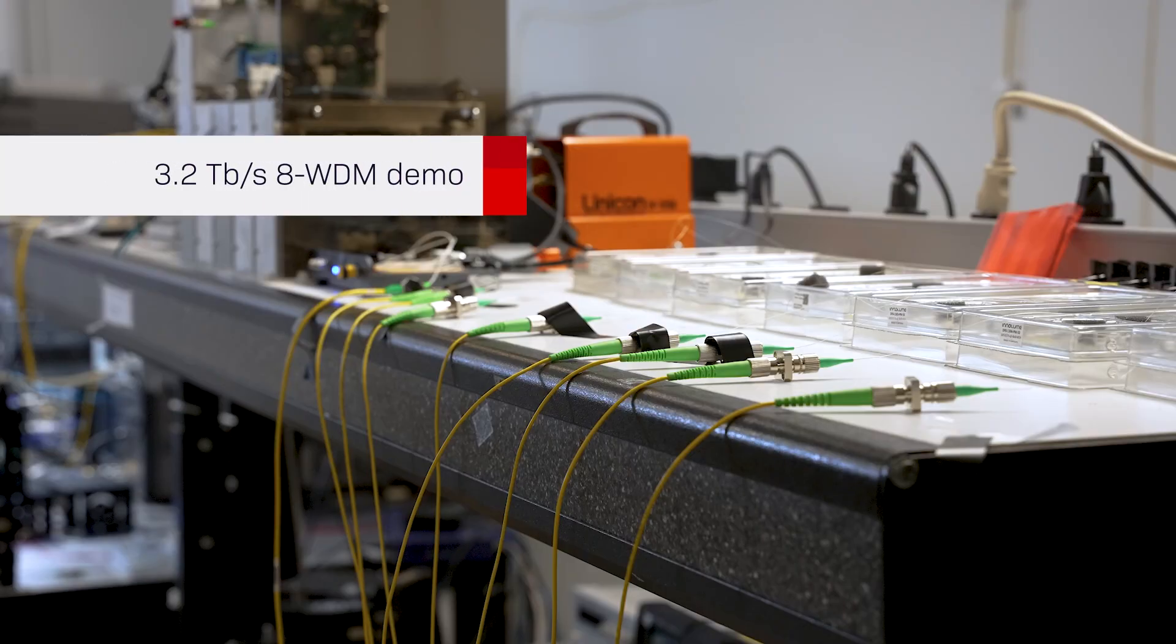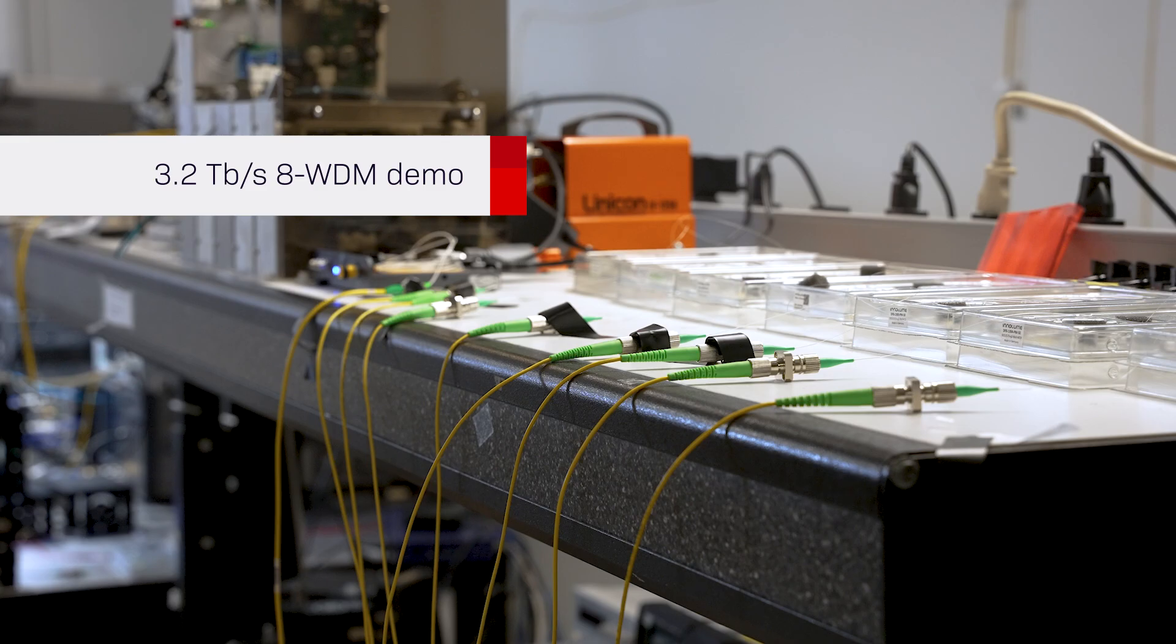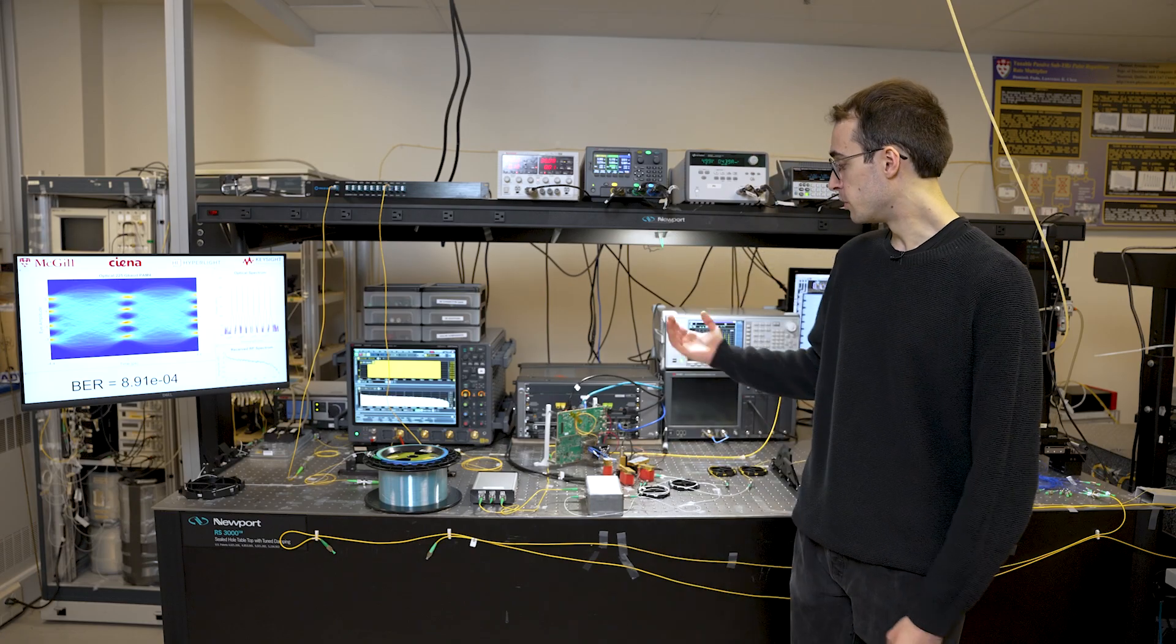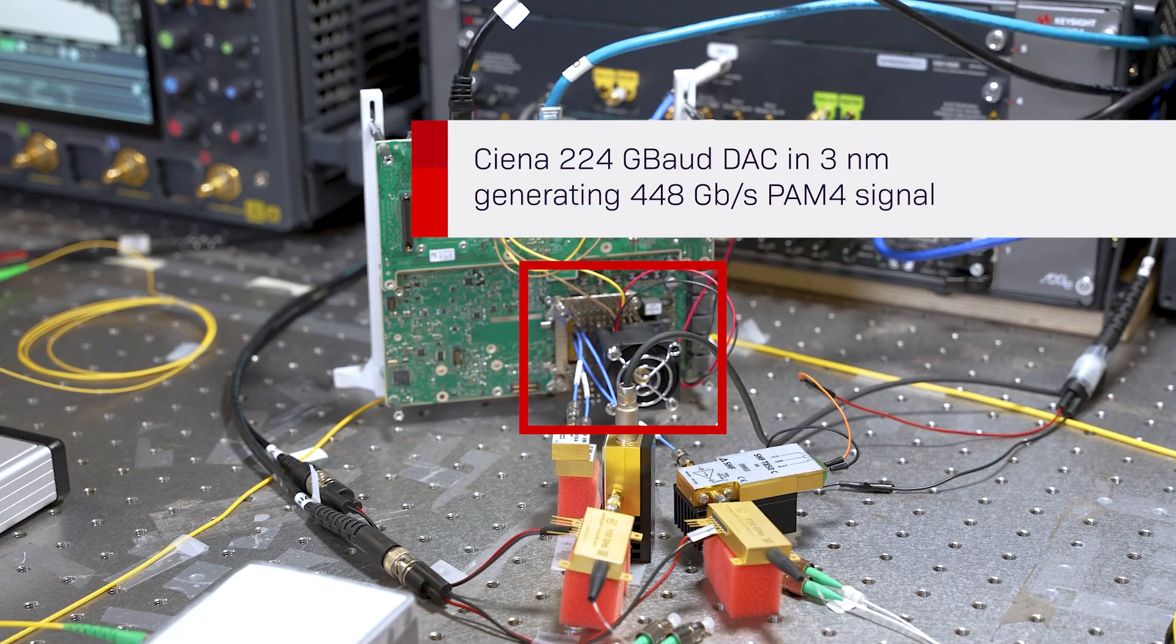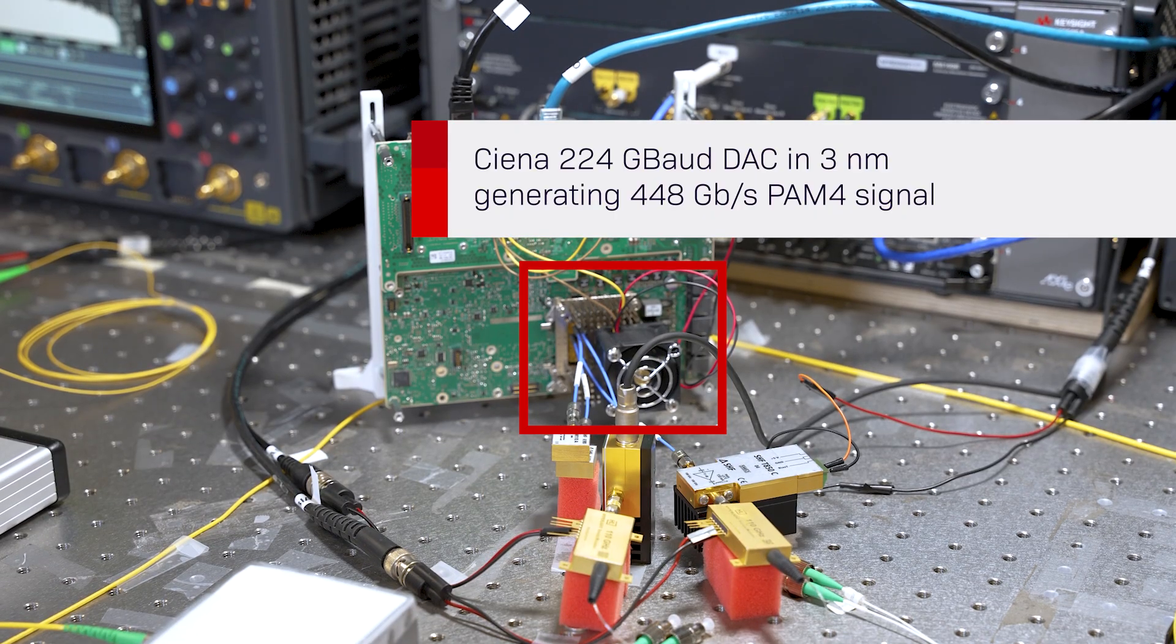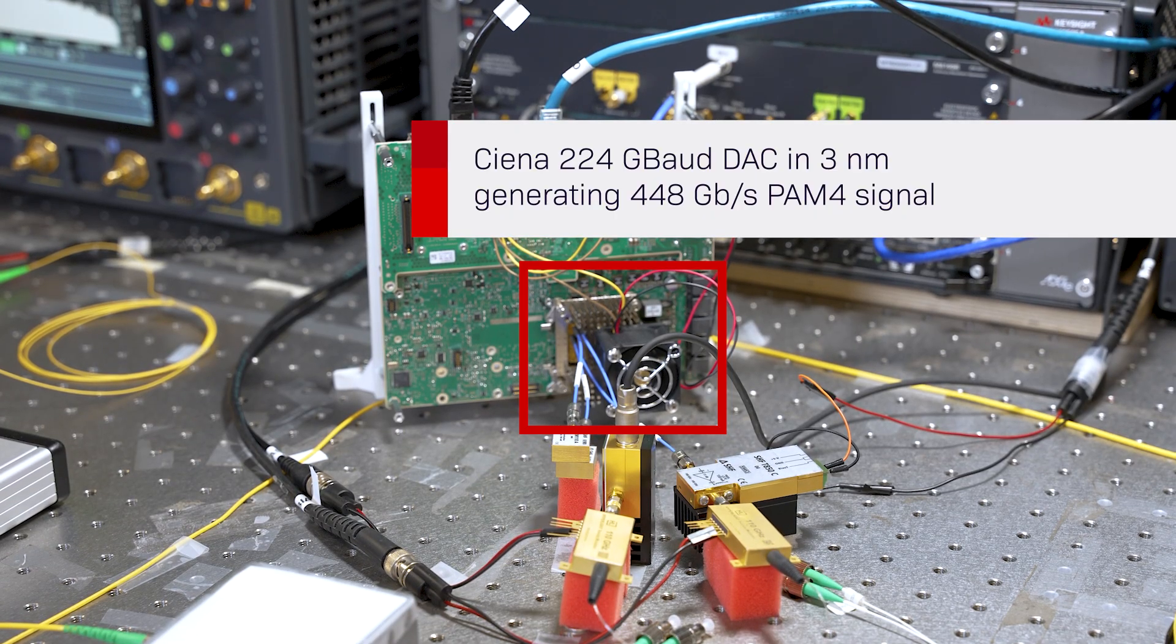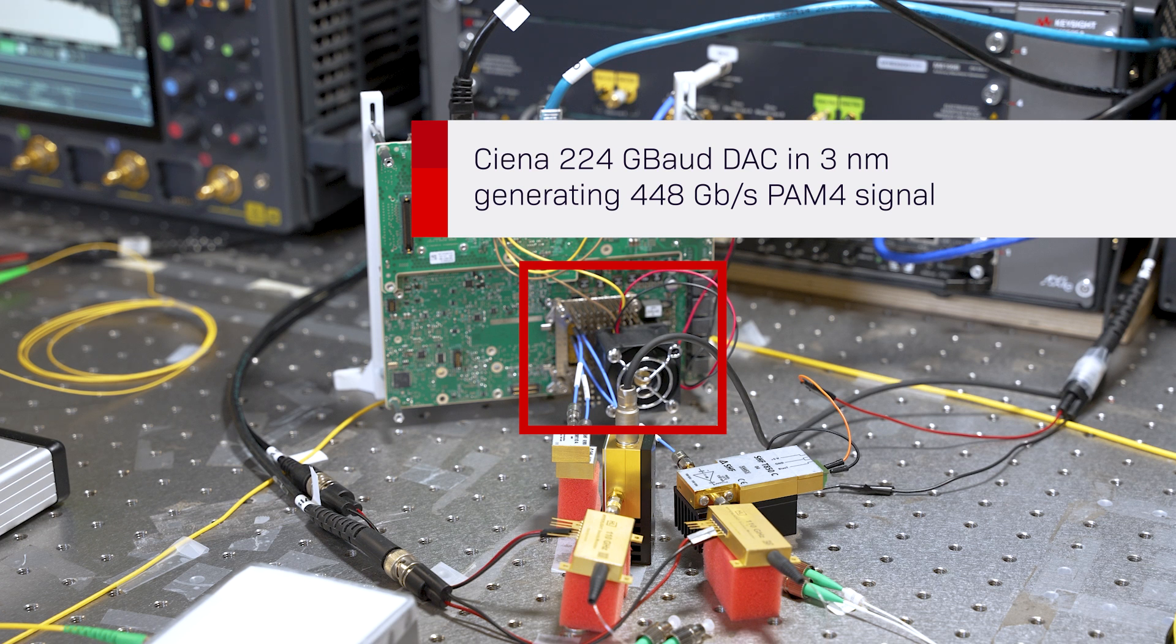The first demonstration is an 8 wavelength division multiplexing experiment where we demonstrate 3.2 terabit per second with 8 wavelengths. Using McGill's digital signal processing, we programmed the Ciena 3 nanometer 224 gigabaud DAC to generate a 448 gigabit per second PAM4 signal.